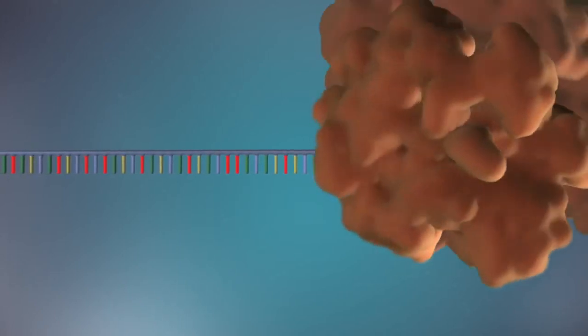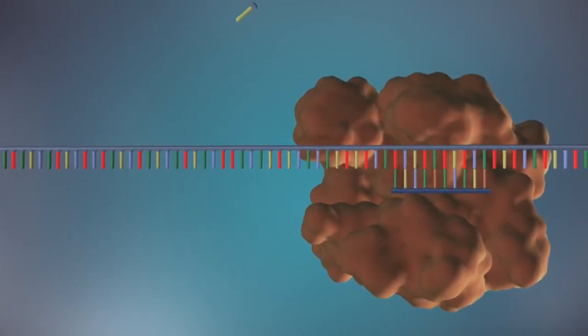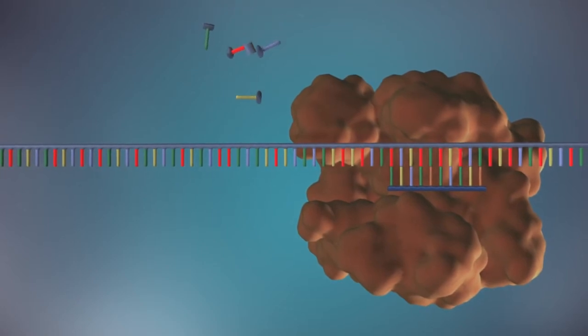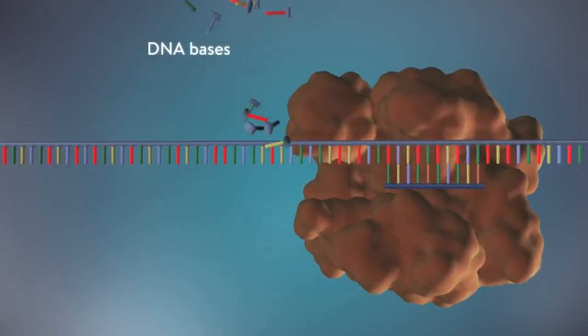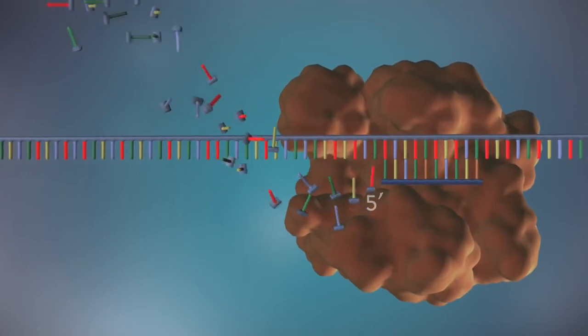An enzyme called DNA polymerase binds to the primer and will make the new strand of DNA. DNA polymerase can only add DNA bases in one direction, from the five prime end to the three prime end.